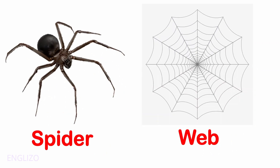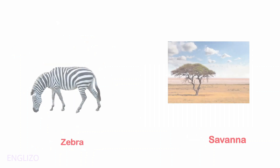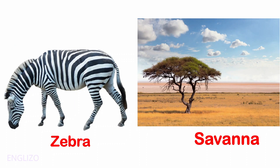A spider lives in a web. A zebra lives in the savannah.